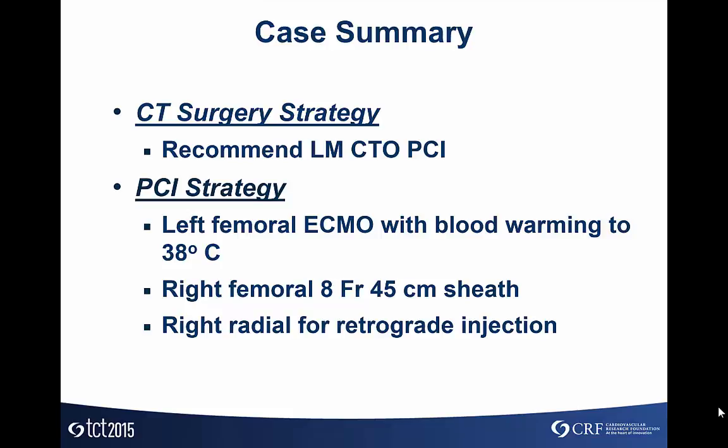Our surgical colleagues agreed to back us up if we were not successful. Our PCI strategy was to place left femoral ECMO with blood warming to 38 degrees, so she was on full ECMO with warming. If we failed or had some sort of disaster, we had the support and they could perform the operation. We also placed an 8 French 45-centimeter sheath on the right femoral and a right radial for retrograde injection.